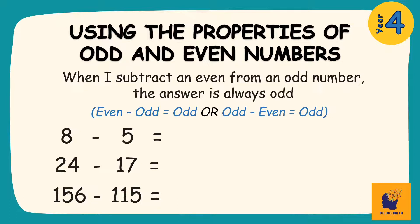We can check to see this is true by solving each of these problems. 8 take away 5, an even number take away an odd number, is 3, an odd number. And 156 take away 115, an even number take away an odd number, is 41, an odd number.